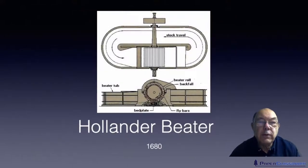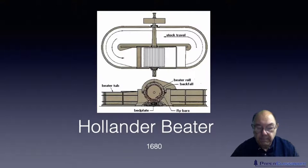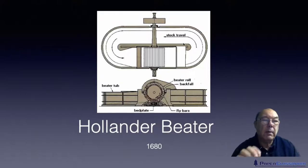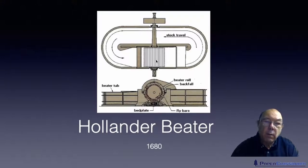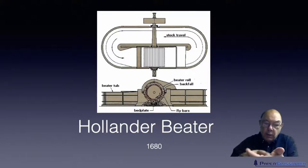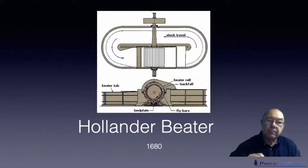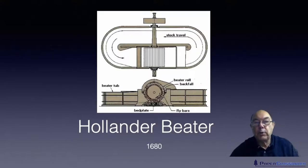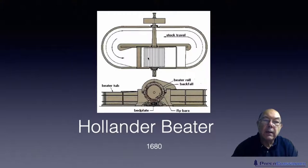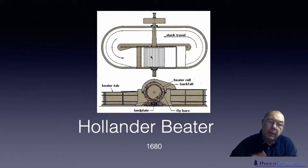Probably the most important invention in working on fibres was the Hollander beater, invented in Holland around 1860. It has a tub with a wall running down the middle called the mid feather — remember that term. There is a beater roll with bars on its surface, and a bed plate with a concave surface that also has bars, with the beater roll sitting in it. The beater roll can be lifted or lowered to produce more or less pressure. As it turns, it causes the water and fibres to circulate, and the fibres get worked on when crushed between the bars on the bed plate and the bars on the beater roll.